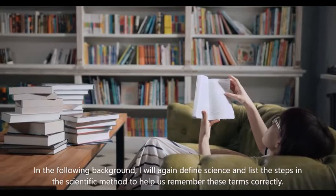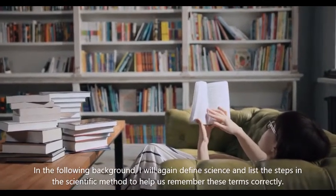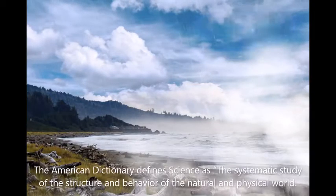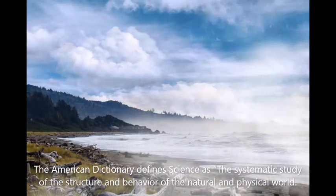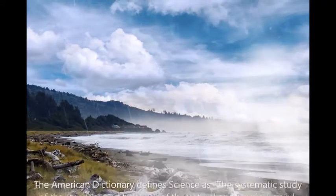In this background, I will again define science and list the steps in the scientific method to help us remember these terms correctly. The American Dictionary defines science as the systematic study of the structure and behavior of the natural and physical world.